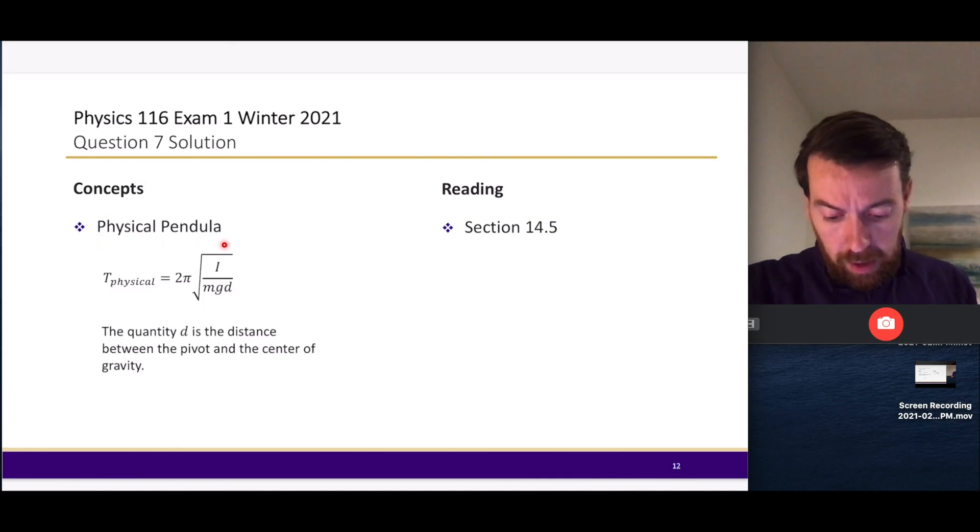The period of a simple pendulum for reference is 2π√(L/g), but once we get to a physical pendulum we have to take into account the moment of inertia of the physical pendulum, that's I, and we also have to take into account how far the pivot point is from the center of gravity of the physical pendulum itself.